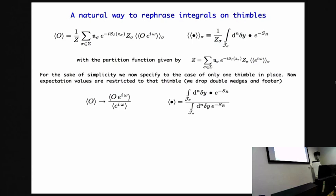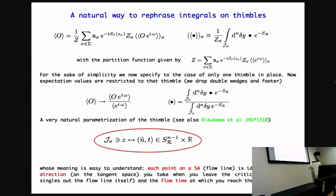I will specify the following to the case in which there is one single thimble, so I will drop these, both the double angle notation and the sum over sigma. But believe me, it's not going to change, and that is the integral I want to compute. In the end, I want to compute something which is a re-weighting procedure.